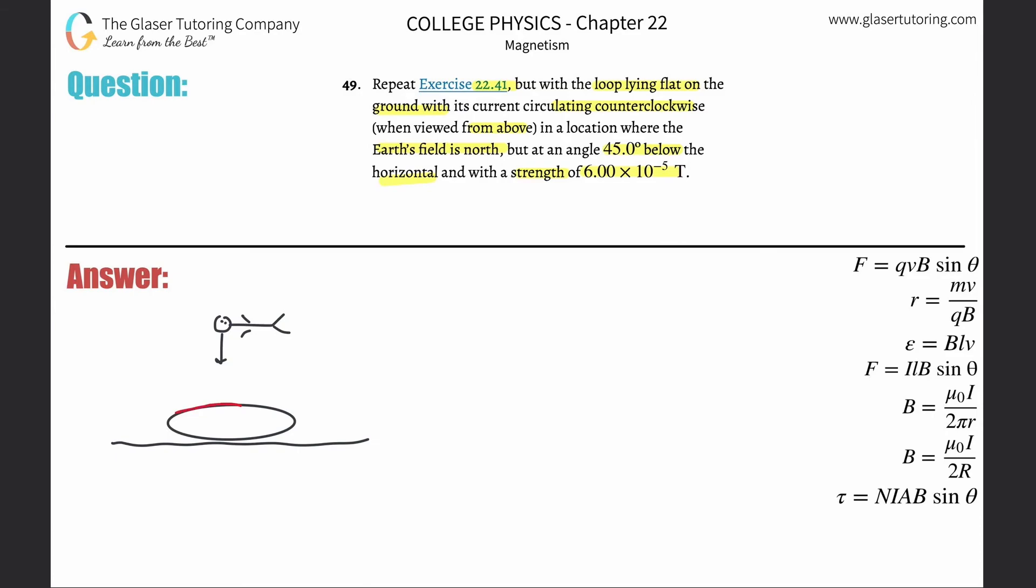So the current should be going around the loop like this. That would be counterclockwise.